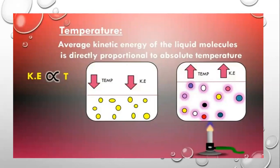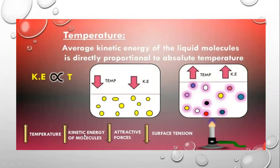Next is how temperature affects surface tension. Temperature is the average kinetic energy of liquid molecules, directly proportional to absolute temperature. When we increase the temperature, kinetic energy increases. When we heat a sample, temperature increases, which increases the kinetic energy of the molecules. Because kinetic energy increases, attractive forces among the molecules break down or decrease. Because attractive forces decrease, surface tension decreases, and vice versa.